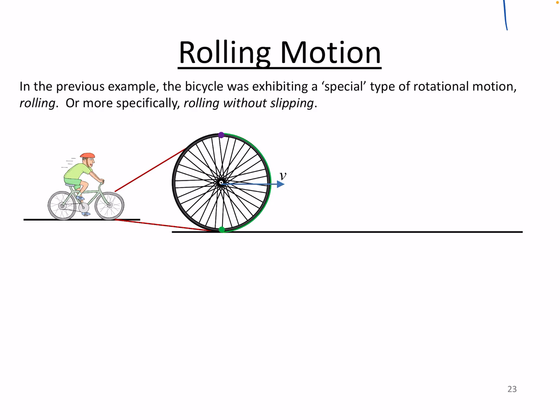The assumption we made is that the arc length — the linear displacement along the tire as I went around and around — that number of meters was exactly equal to the distance I actually covered in a straight line.